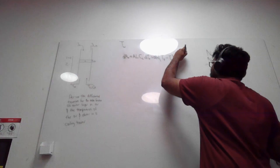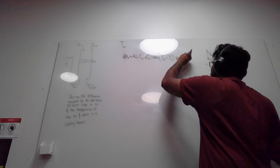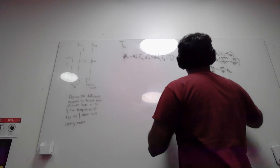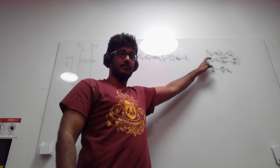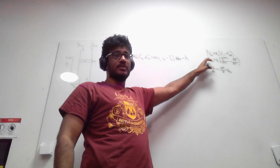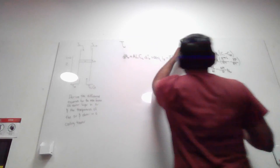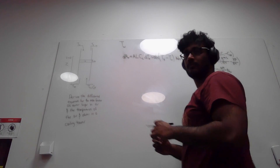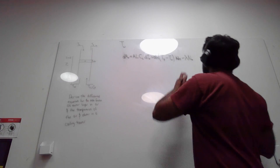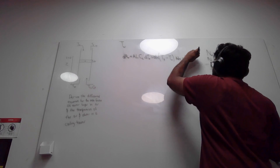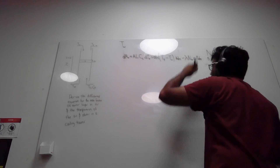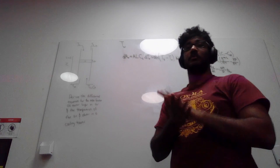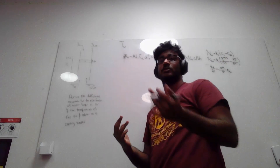We subtract the heat of vaporization lambda times the molar flux of water Nw — which was already defined in our first derivation — and we multiply that by the specific area times the differential volume a·dz, in order to capture the specific area relevant to calculating the change in temperature of the water.